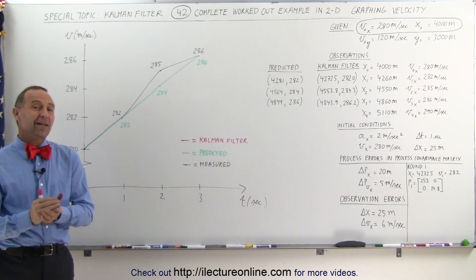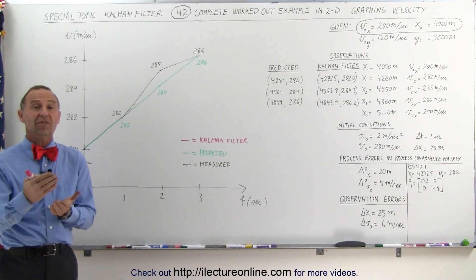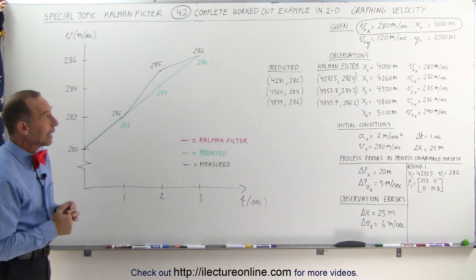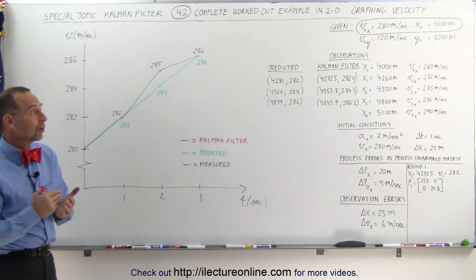Welcome to Electron Online, and now let's take a look at the graph for velocity as a function of time. This is, of course, for our third example.